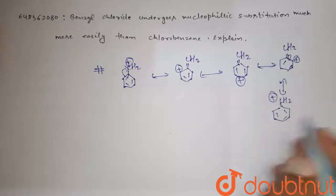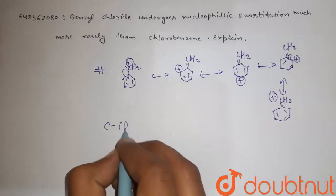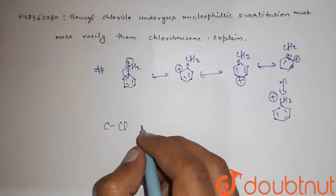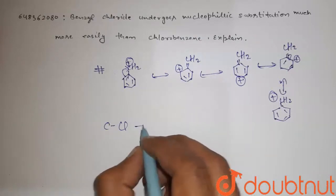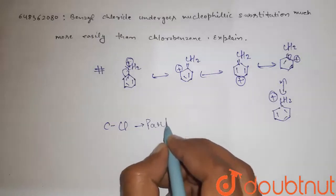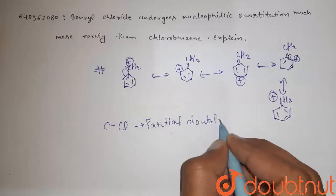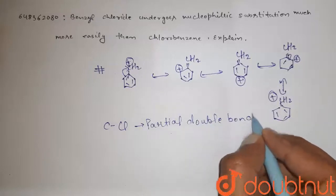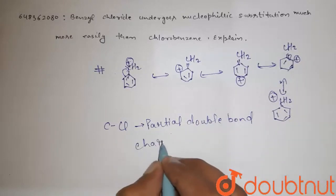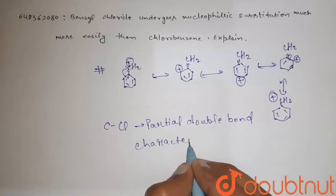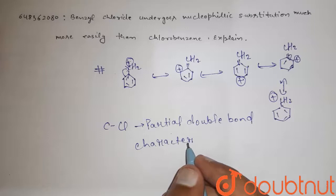So on the other hand, the carbon-chlorine bond in benzene has partial double bond character due to resonance and hence difficult to cleave.